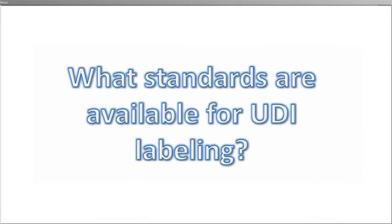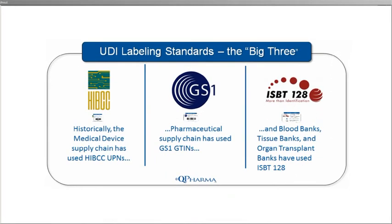Tom, what standards are available for UDI labeling? There are three main labeling standards that can be used for the device identifier component of UDIs. In no particular order they are: HIBCC UPNs, or universal part numbers, which have been historically used in medical device supply chains; GS1 GTINs, or global trade item numbers, which have been widely used in pharmaceutical supply chains but have been expanding into medical devices; and ISBT 128 codes, which are commonly used in the blood and blood product sector as well as in organ transplant labeling. These traditional alignments are evolving rapidly, and each standard has positives and negatives that you need to carefully consider for your organization.